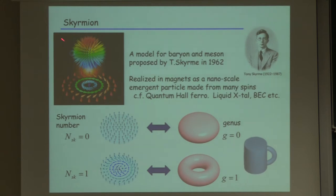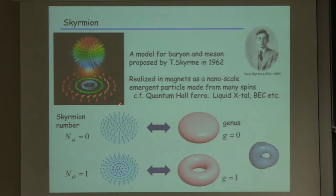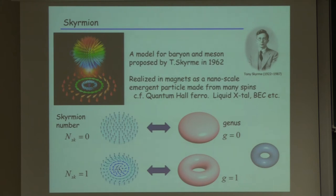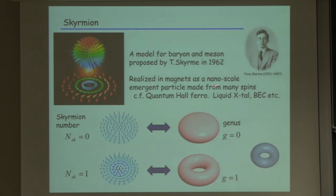Most of you already know about the skyrmion. A skyrmion is a spin texture made from many spins. There is a mapping from two-dimensional space to the unit sphere, and you can count how many times the spin direction wraps the unit sphere. The ferromagnetic structure is trivial, but the skyrmion structure has a topological index of 1. This is analogous to topological geometry — you cannot transform one to the other by continuous deformation of the spin structure.